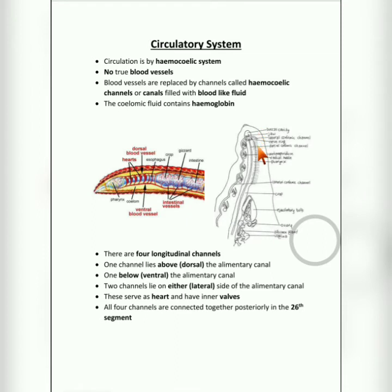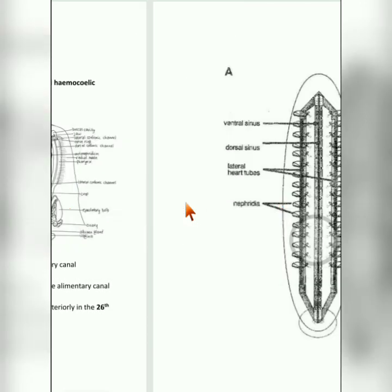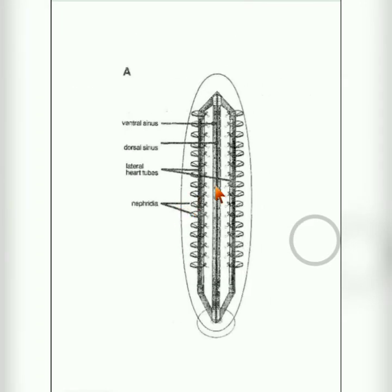These canals serve as heart and they have inner walls. All four channels - the dorsal, ventral, and two lateral channels - are connected together posteriorly in the 26th segment. This is very simple and no diagram is given in the book.